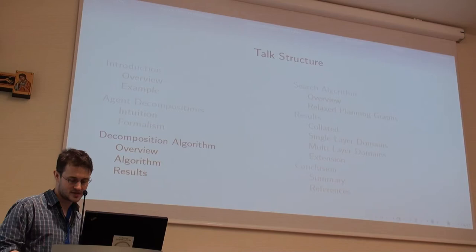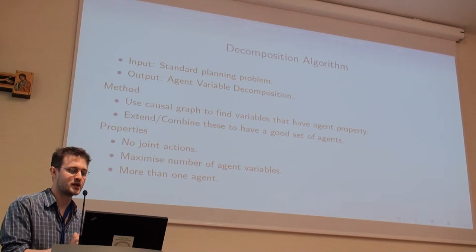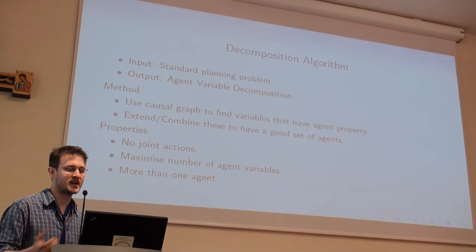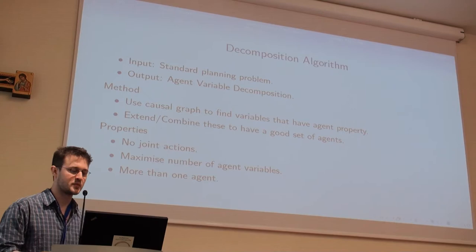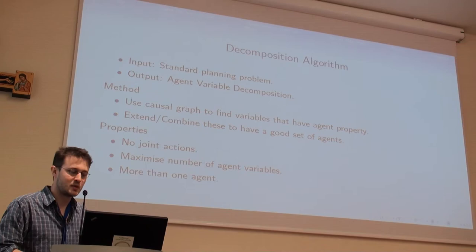Now I'm going to explain the decomposition algorithm. The input is any standard planning problem that Fast Downward can find an FDR representation for, and the output is an agent variable decomposition if one exists. We use the causal graphs — also generated by Fast Downward — because there's a link between the causal graph structure and these internal variable sets. The properties we look for are agent variable sets that don't have any joint actions; we maximize the number of agent variables, minimizing the number of variables left as environment, and we obviously want more than one agent.